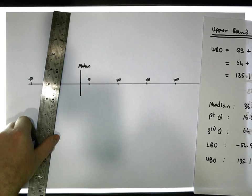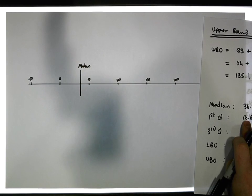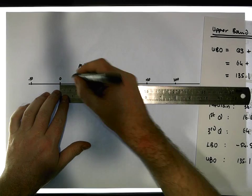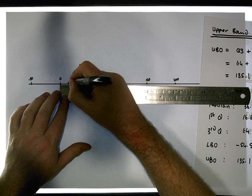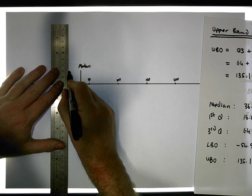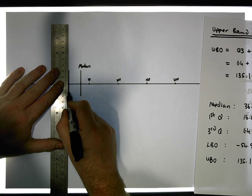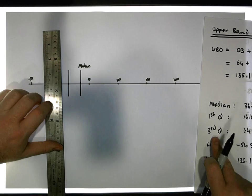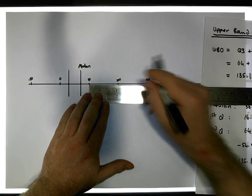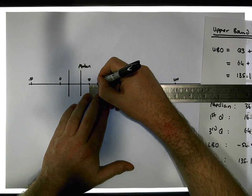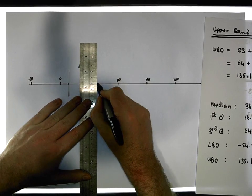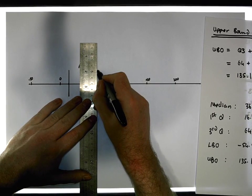Our first quartile is at 16.64, so that's marked in around here. And then our third quartile is at 64.64, which seems to be in around here — so that's my third quartile.